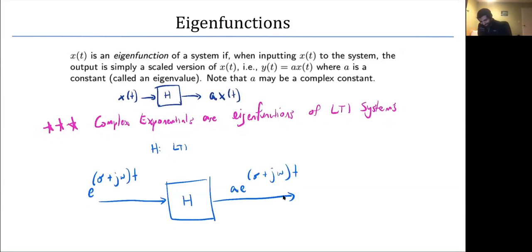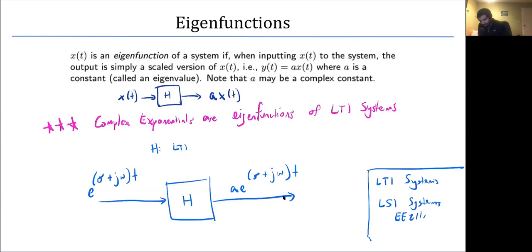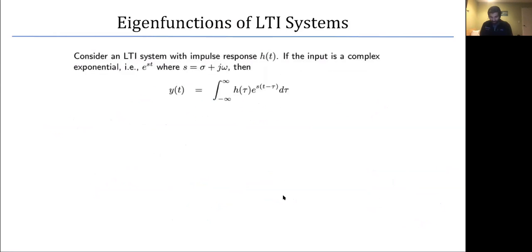A quick note: you'll often hear me say 'LSI systems' instead of 'LTI systems.' LSI stands for Linear Space Invariant and is the notation used in graduate classes when dealing with multi-dimensional signals. Right now we're only dealing with signals with one variable like x(t), but with multiple variables we use LSI. It means the exact same thing, so if I ever say LSI, just mentally replace it with LTI.